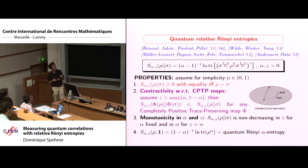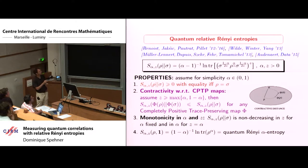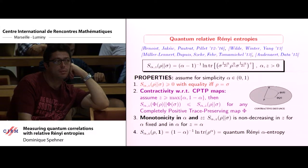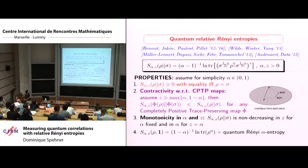Quite recently there was a new definition, generalizing the earlier one, differing just by a different ordering of operators. This formula looks quite complicated but is kind of symmetric in sigma and rho. Interestingly, I first heard about this formula in a completely different field — from the school of Claude-Alain Pillet and Jakšić, working on out-of-equilibrium statistical mechanics — and then it was taken up by people in quantum information. There are two parameters, alpha and Z, and when the operators commute, you recover the classical Rényi entropy formula.